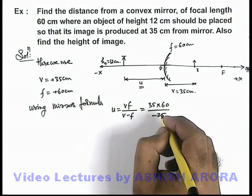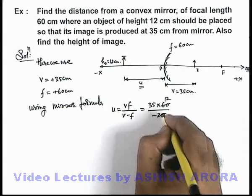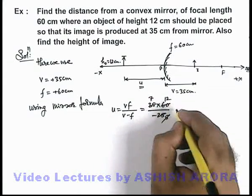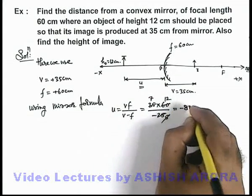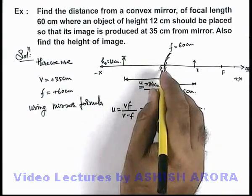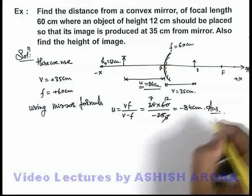On simplifying, 5 gets cancelled, this will be 7, and 12 multiplied by 7 gives us minus 84 centimeters. That means u is 84 centimeters where the object should be placed in front of the mirror. That is one answer to this problem.